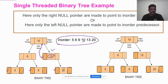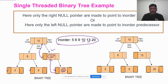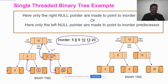When it comes to node 20, the left pointer of 20 is null. Which node will it be connected to? Find that node in the inorder. What comes before 20? It is 13. So 13 is the predecessor, and this node will be connected to node 13. After that, node 9 — the inorder predecessor of 9 is 6, so node 9 will be connected to node 6.